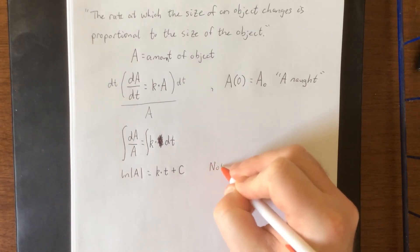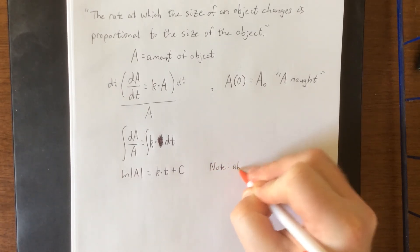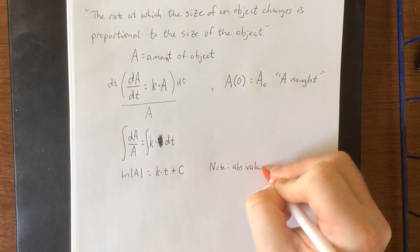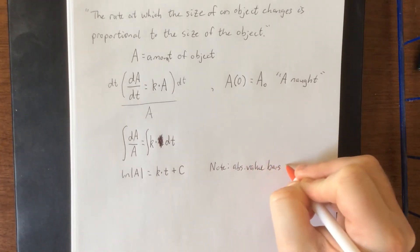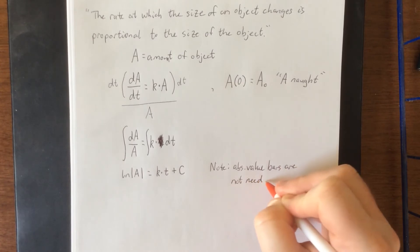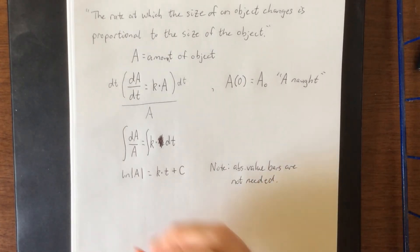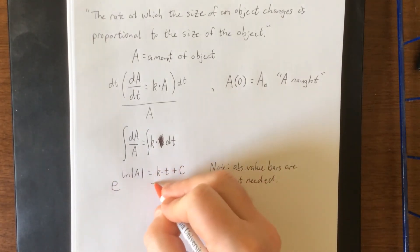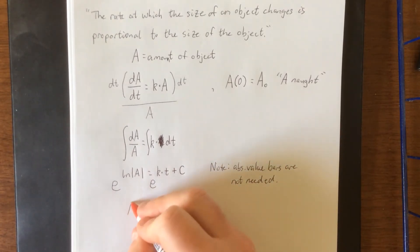We'll point out here the absolute value bars are not needed since we're representing a physical quantity. As such we're going to exponentiate both sides. This will give us A is equal to e raised to the power of kt plus c.